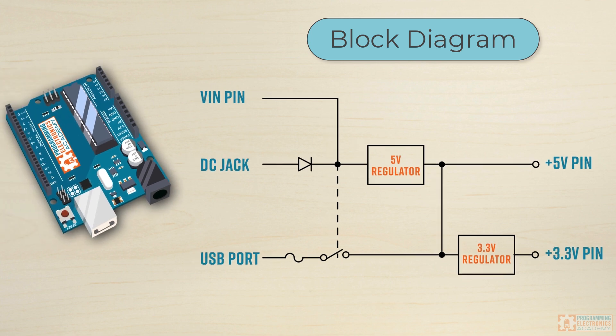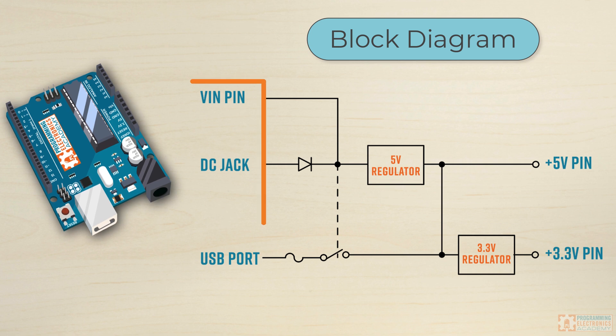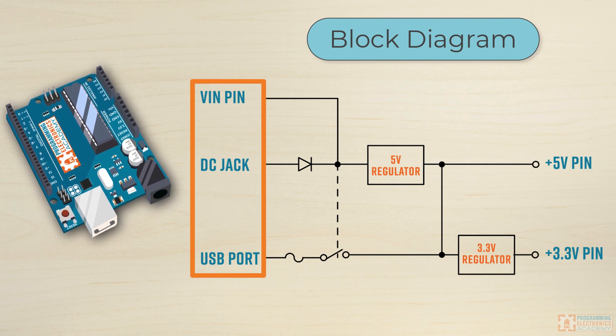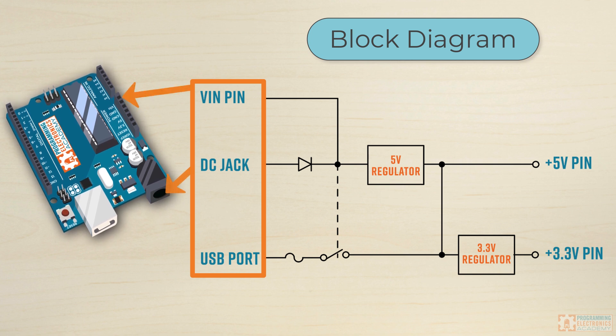We're going to be referring to this block diagram quite a bit, so it doesn't hurt to get familiar with it. On the left-hand side, you can see those three different methods for powering this Arduino Uno board: the VIN pin, the DC jack, and the USB port.